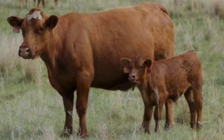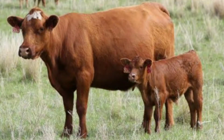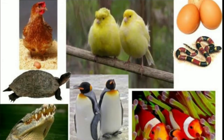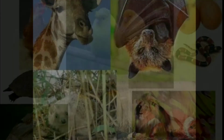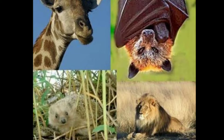A cow gives birth to a calf. Before that, the calf grows within the cow's body. According to the mode of reproduction, animals are classified into two types.